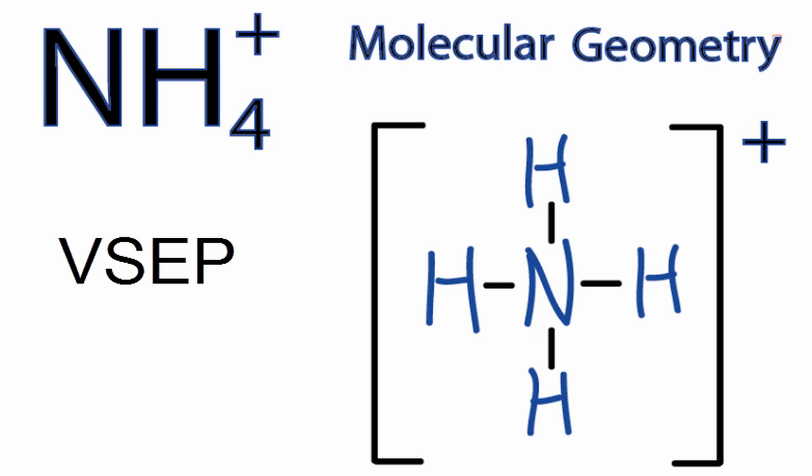and the valent shell electron pairs around those hydrogens are going to repel each other. When they do, they'll spread out, and the molecule will have a structure that looks something like this.